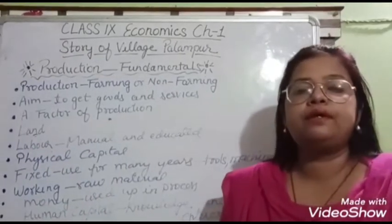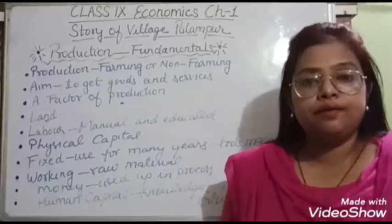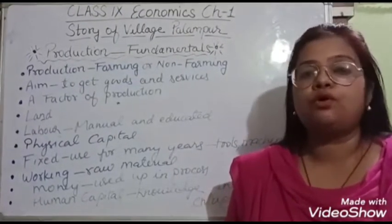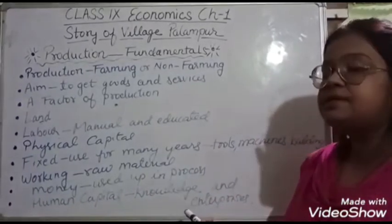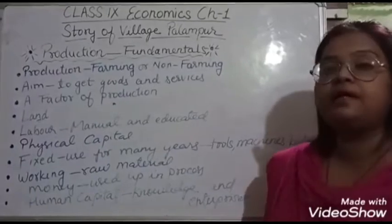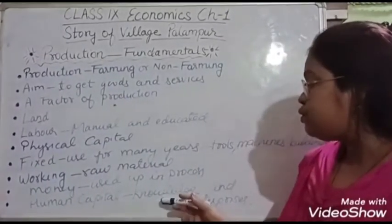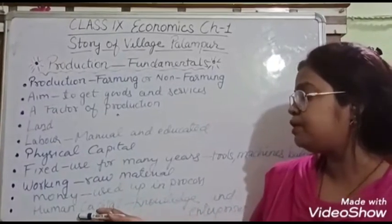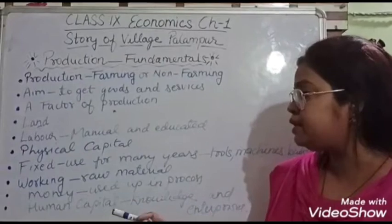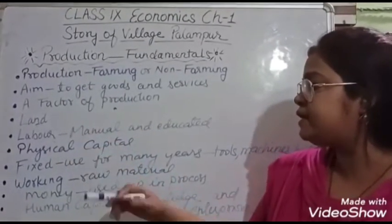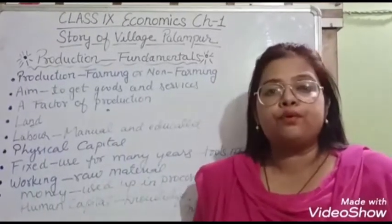Human capital means human resources — the people working for production in the fields or non-farming industries. These people have knowledge, experience, enterprise, and skill. Their physical strength also comes under human capital. So the factors of production are: land, labor, physical capital, money, and human capital.